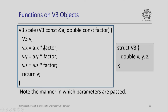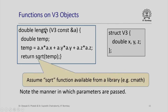Similarly, the scale function takes a vector passed by const reference and a scaling factor which is also const double. It simply scales each of the x, y, and z coordinates of vector a by the scaling factor and returns the resulting vector. The length function takes a vector a by const reference and calculates the square root of x squared plus y squared plus z squared.